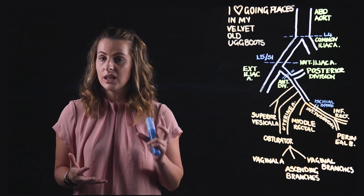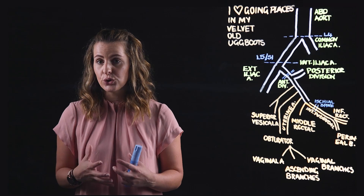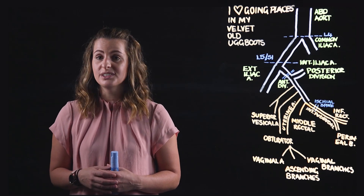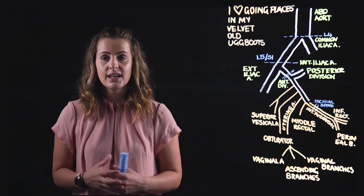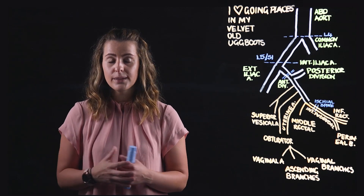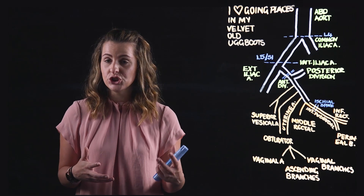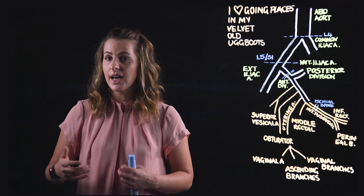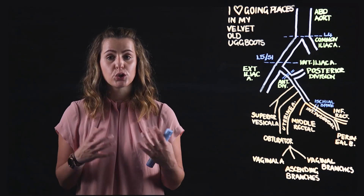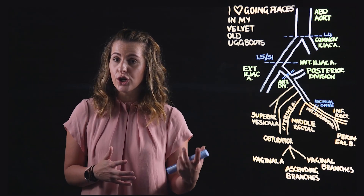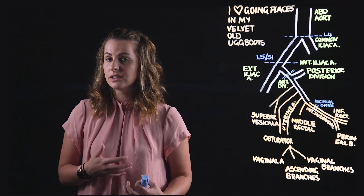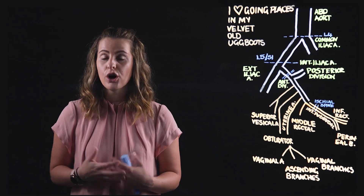The final and largest terminal branch of the anterior division of the internal iliac is the inferior gluteal artery, supplying the thigh and buttock regions. It passes through the rami of S1 to S3, courses through the piriformis and ischiococcygeus muscles, and exits via the greater sciatic foramen inferior to the piriformis to supply the gluteus maximus. It also supplies the pelvic diaphragm, the lateral rotators of the hip, and the superior portion of the hamstring muscles.